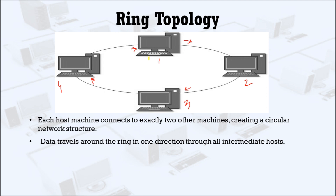Node one wants to send some data to node four. Node one sends the data to its intermediate node, node two. Node two will receive the data and check whether the data is for it. If not, it retransmits the data to its adjacent node, node three.